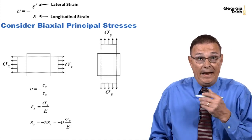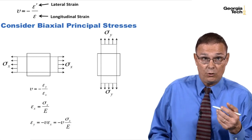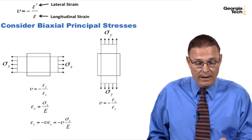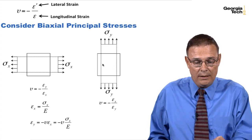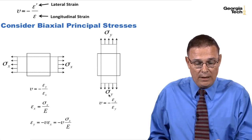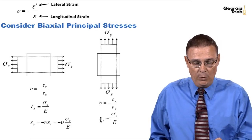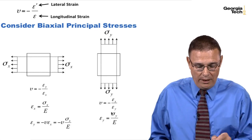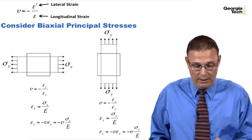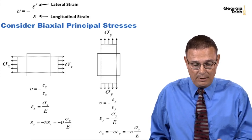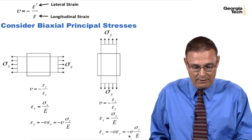We can do a similar approach when adding stress in the y direction for a biaxial stress condition. Here the lateral strain is in the x direction and the longitudinal strain is in the y direction. Epsilon y by Poisson's ratio is sigma y divided by Young's modulus. The strain in the x direction equals minus Poisson's ratio times epsilon y. Substituting in Young's modulus gives this expression.